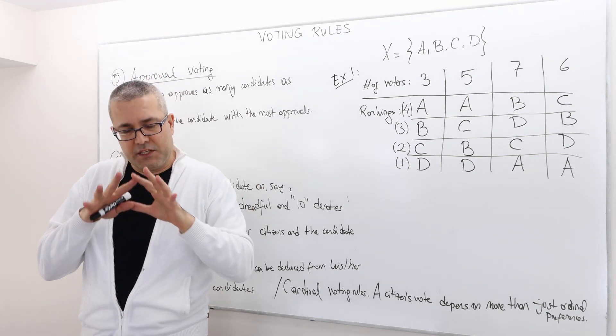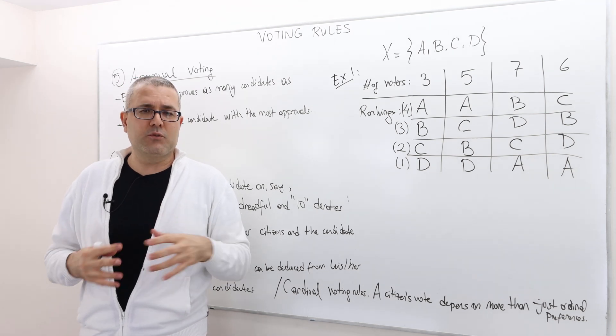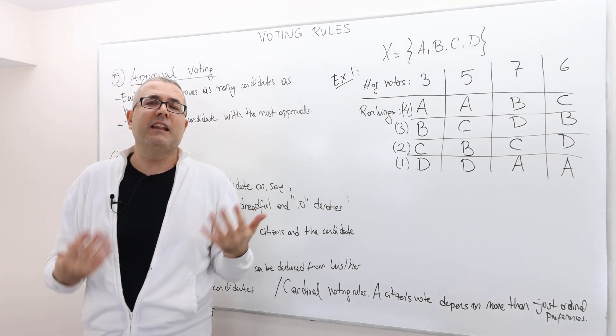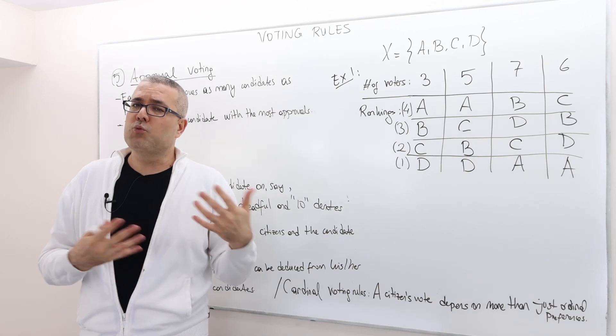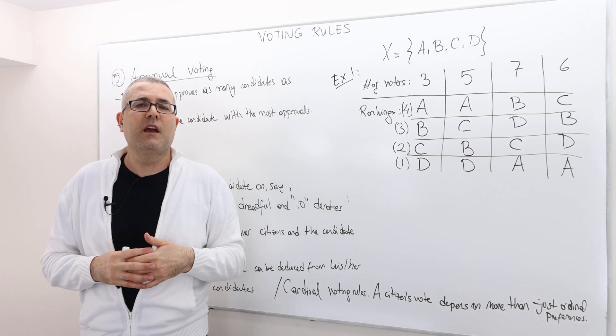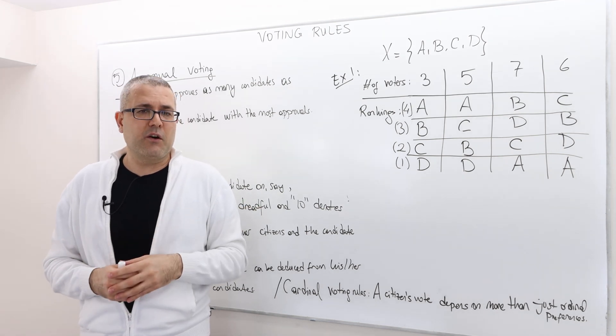I will actually talk about a framework which allows not only ordinal, but also cardinal preferences. And then after describing the framework, I'm going to talk about some axioms or properties that voting rules hopefully satisfy. And then later, we're going to talk about some theorems and basically summarize which voting rules satisfy what axioms. And then finally, I'm going to finish with strategic voting.